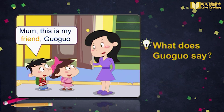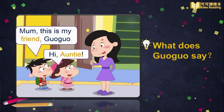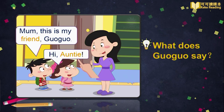Now think — if you were Guo Guo, what would you say to Mau Mau's mom? Have you got the answer? Let's check. Guo Guo says: Hi, Auntie. 'Auntie' means 阿姨 in Chinese. Now please repeat: Hi, Auntie.